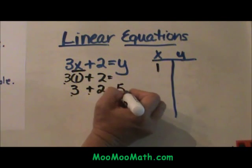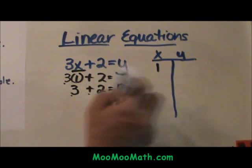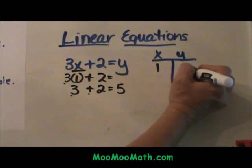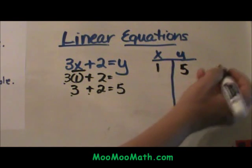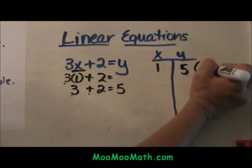3 plus 2 is 5. So when I plug in 1 I get out a 5, so that is my output. The ordered pair if I were to graph it would be the point (1,5).